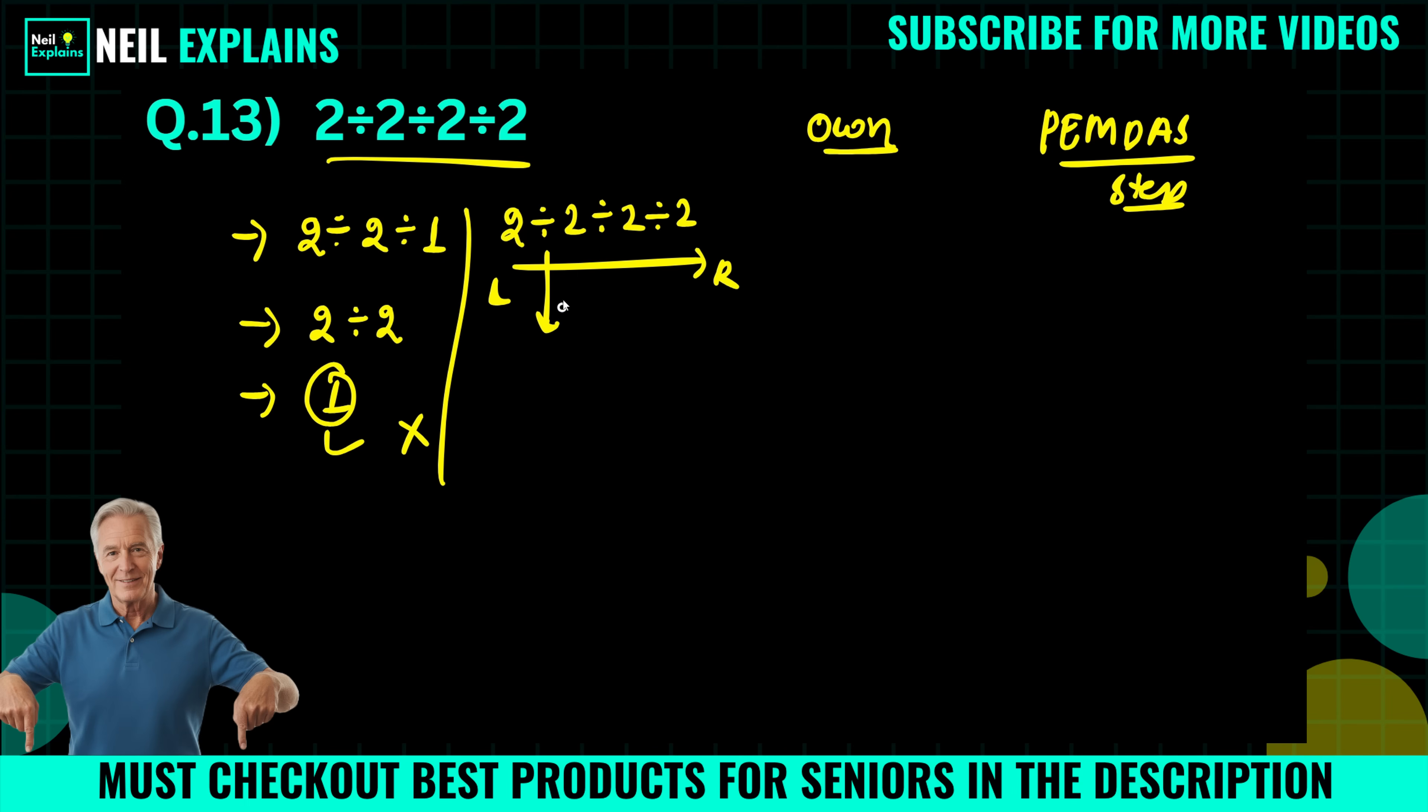When we operate 2÷2, we will get 1 as an answer. So we can rewrite this as 1÷2÷2. Here, 1÷2 can be simply written as 1/2, so we will rewrite it like this: 1/2÷2. To solve this, we will use the KCF rule. We keep 1/2 as it is, change this division to multiplication, and flip - this 2 becomes 1/2. So we have 1/2 × 1/2, which equals 1/4.